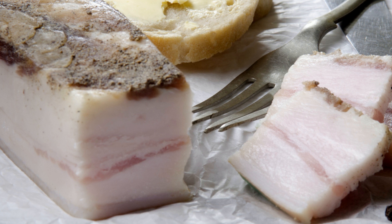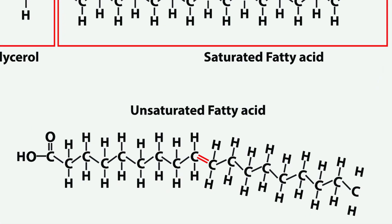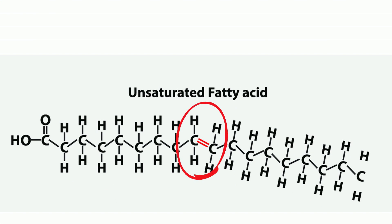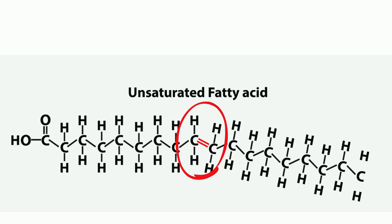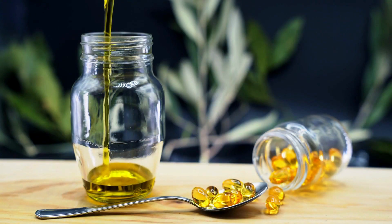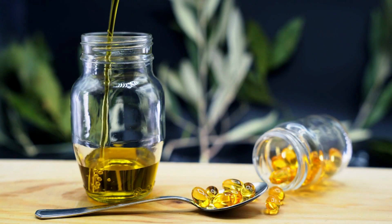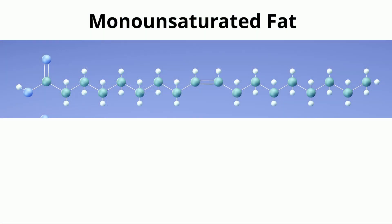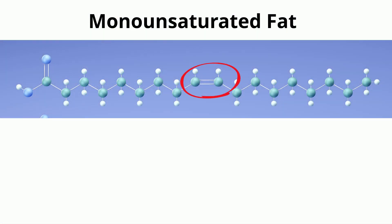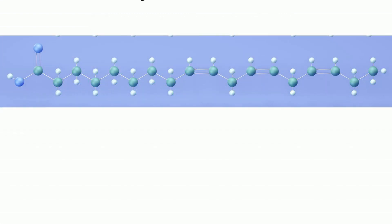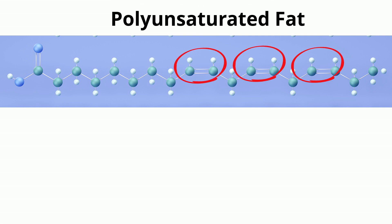An unsaturated fat has a hydrocarbon chain that contains carbon atoms that bind each other with a double bond. These double bonds bend the unsaturated fat, which makes the fat less compact and they're usually liquid at room temperatures. Examples include plant and fish fats. An unsaturated fat with one double carbon bond is a monounsaturated fat, while one with multiple double carbon bonds is a polyunsaturated fat.